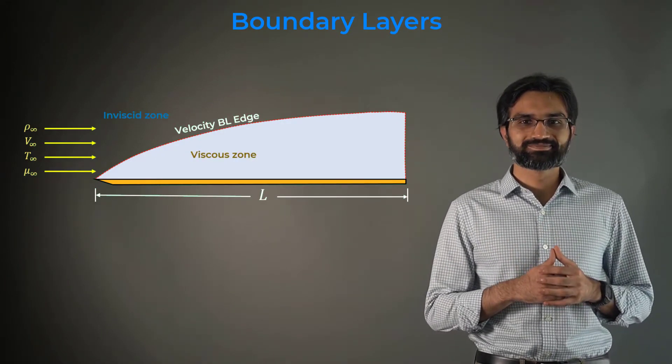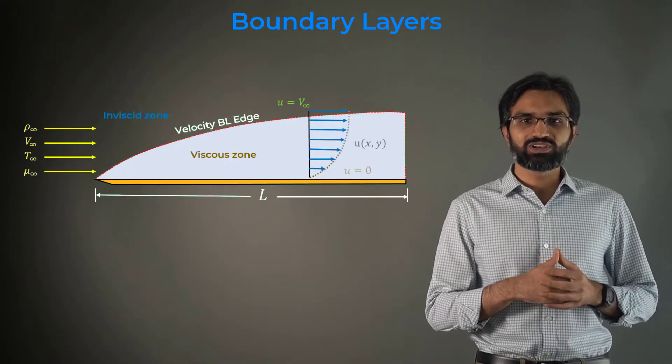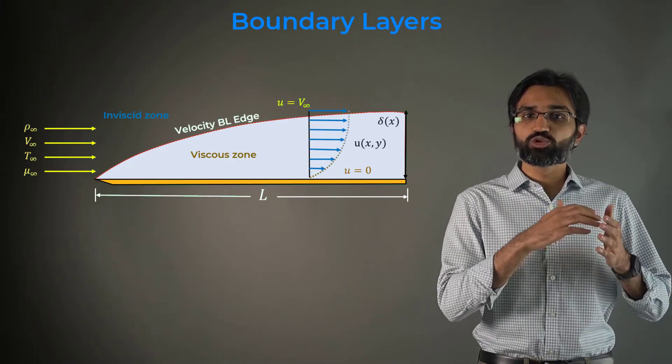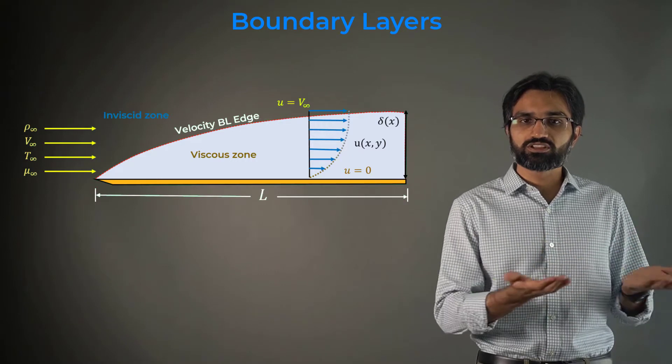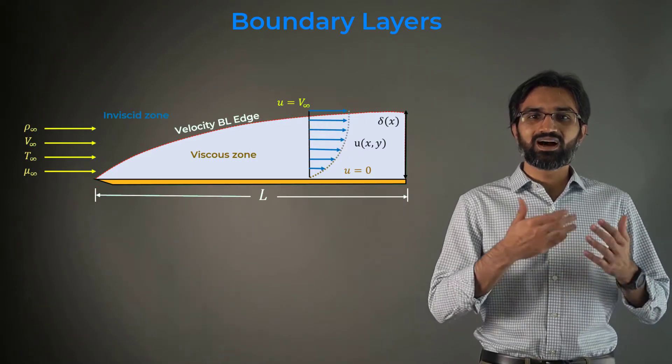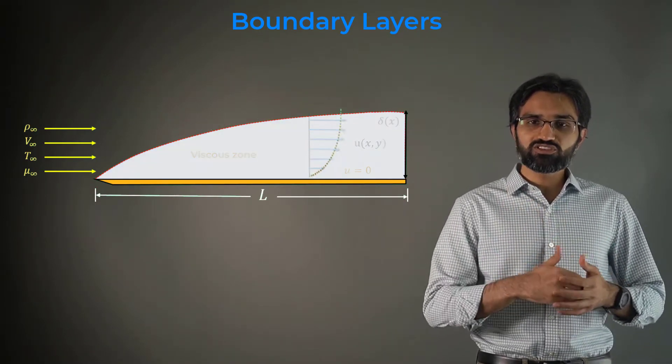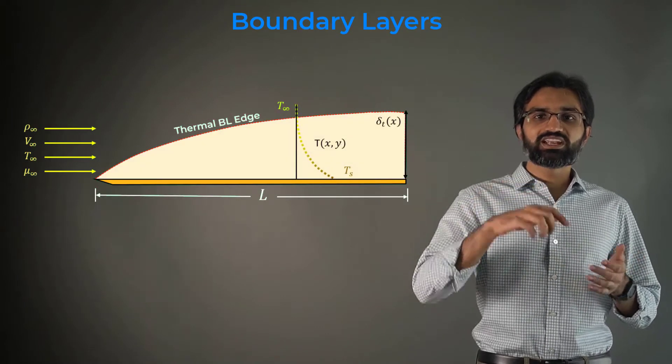Similar to the velocity boundary layer, which is generated due to sharp gradients that exist because of the no-slip condition on the solid surface, a thermal boundary layer is also generated where a temperature gradient is observed.